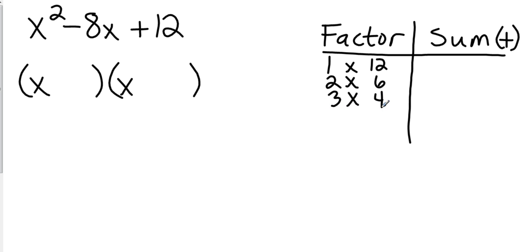And then obviously I have the same ones. I can do negative 1 times negative 12, negative 2 times negative 6, and negative 3 times negative 4. Again, that's only because my answer is positive, and positive times positive is a positive, and negative times negative is a positive.